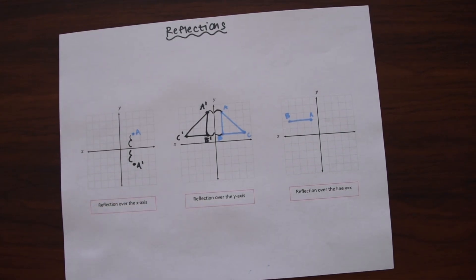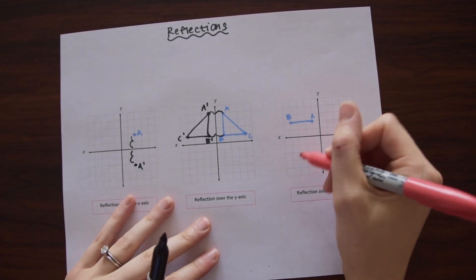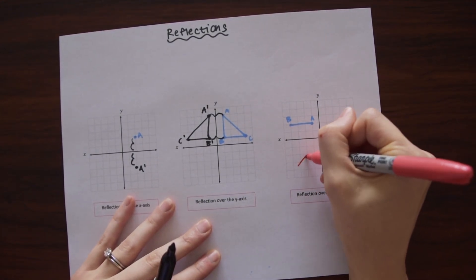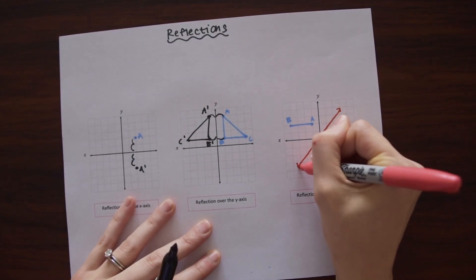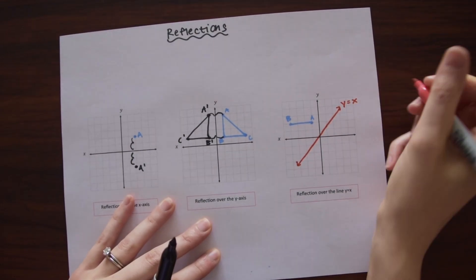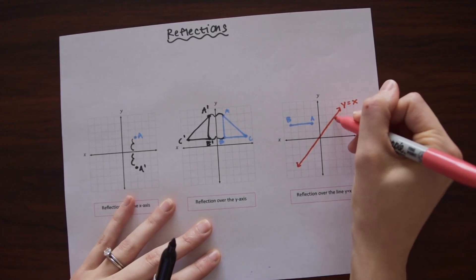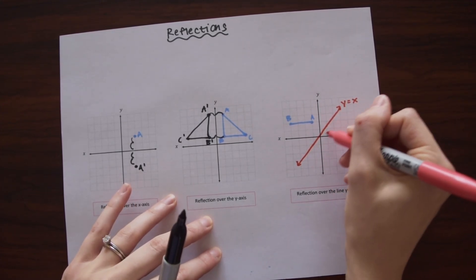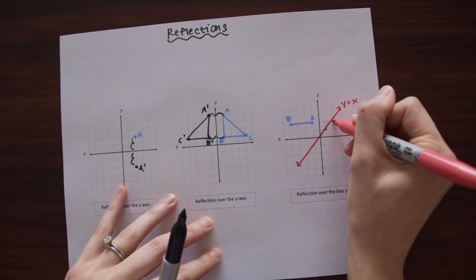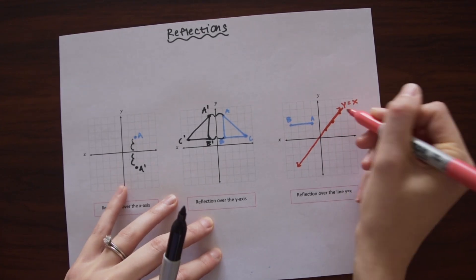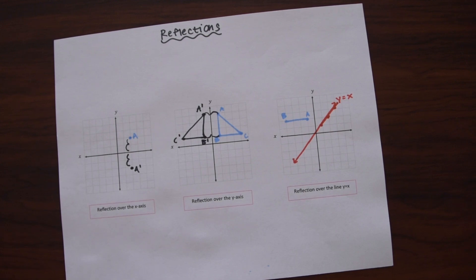Next we have a reflection over the line Y equals X. So just a reminder of what the line Y equals X looks like. It's just this diagonal line. This has a slope of one. So we're just going up one over one from zero. It's not the most perfect, but it really should be on every diagonal like this.